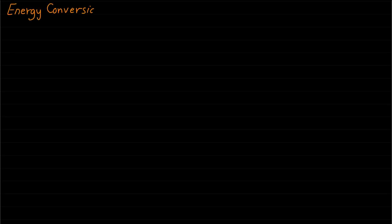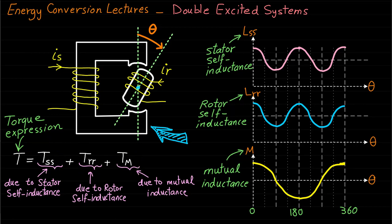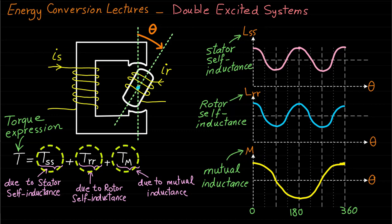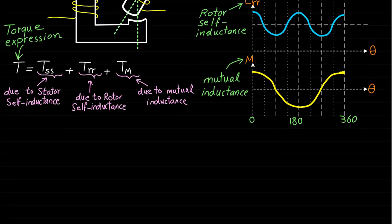Welcome back to the energy conversion lectures. In the previous lecture, we discussed the torque components of this double excited electromechanical energy conversion system and showed how the geometry and inductances of the magnetic circuit decide the available torque components. In this lecture, we will learn how to develop the mathematical torque expression of this double excited system.